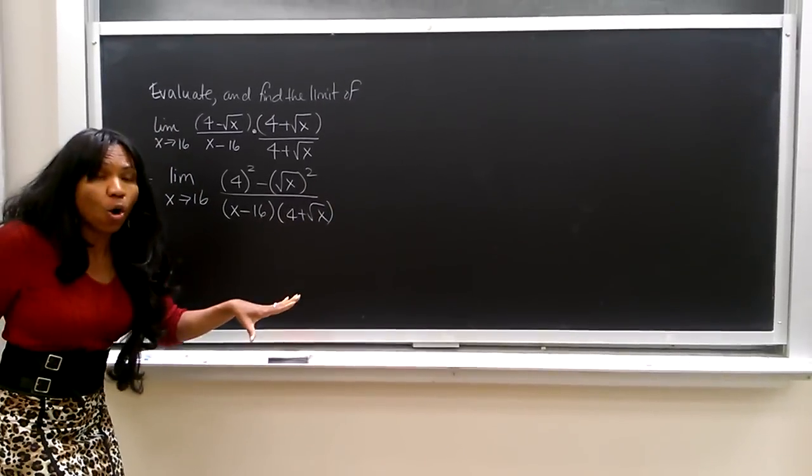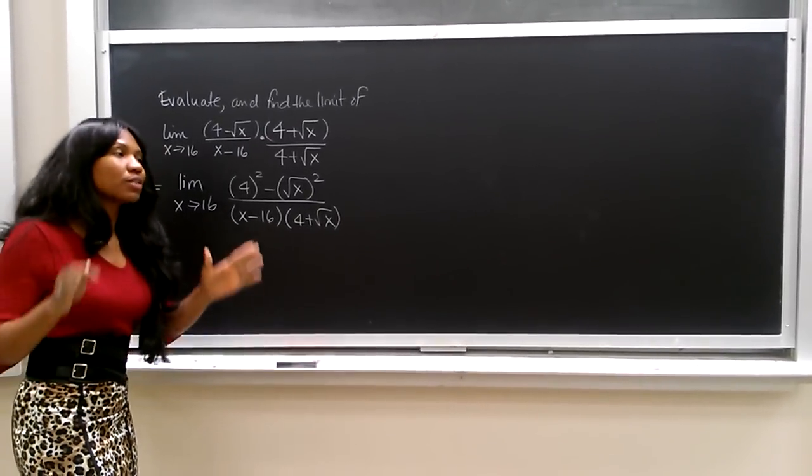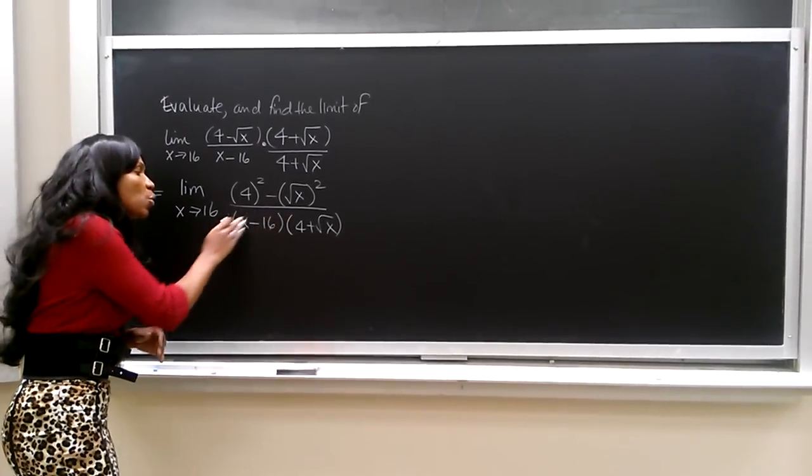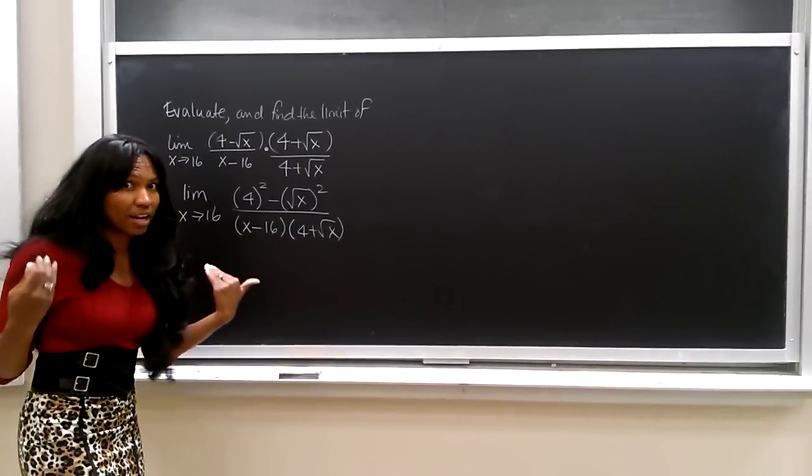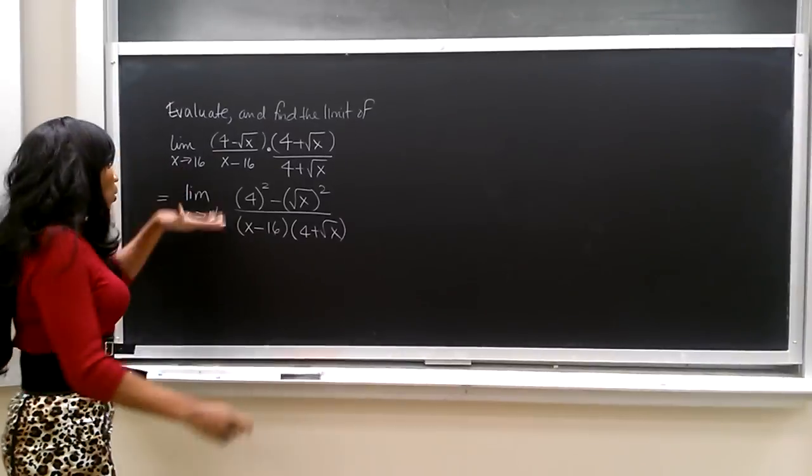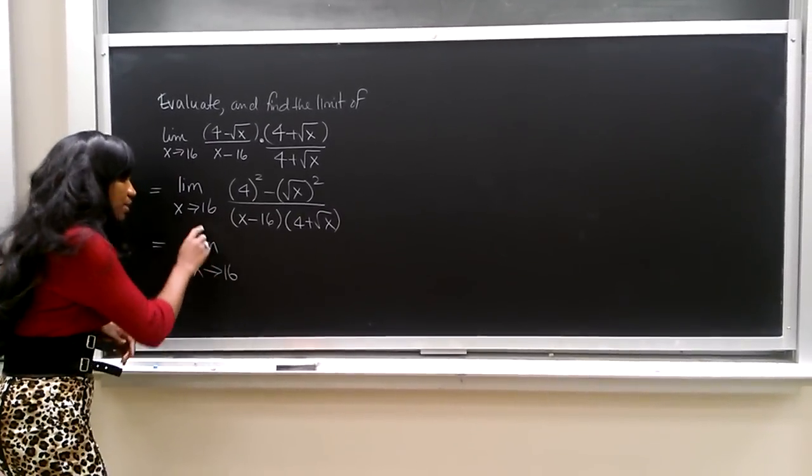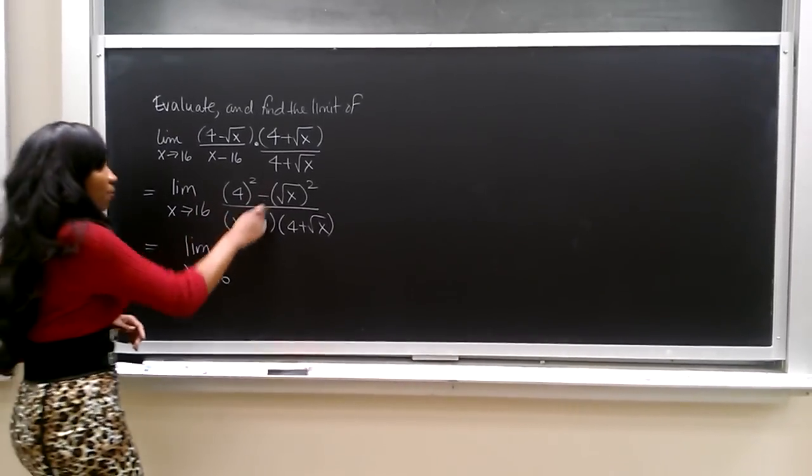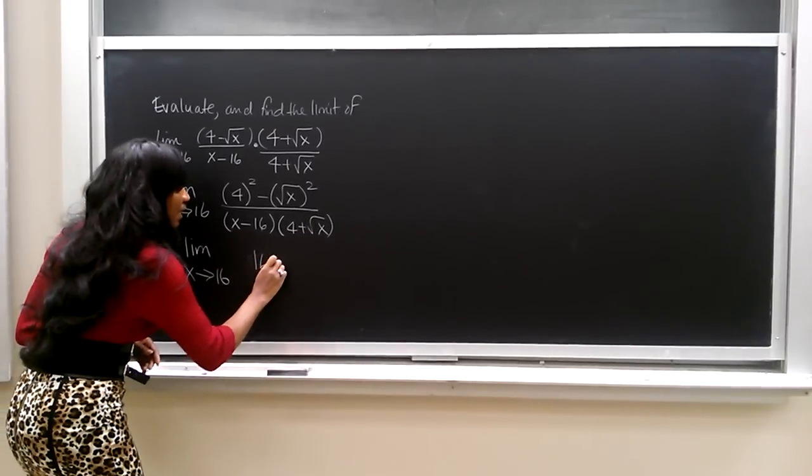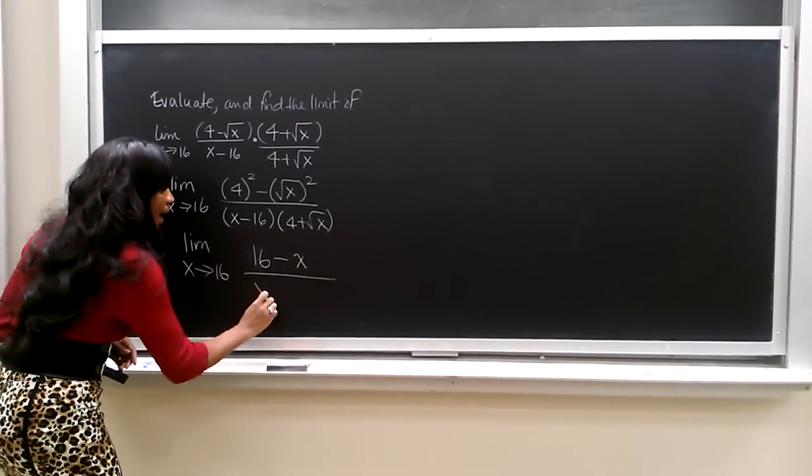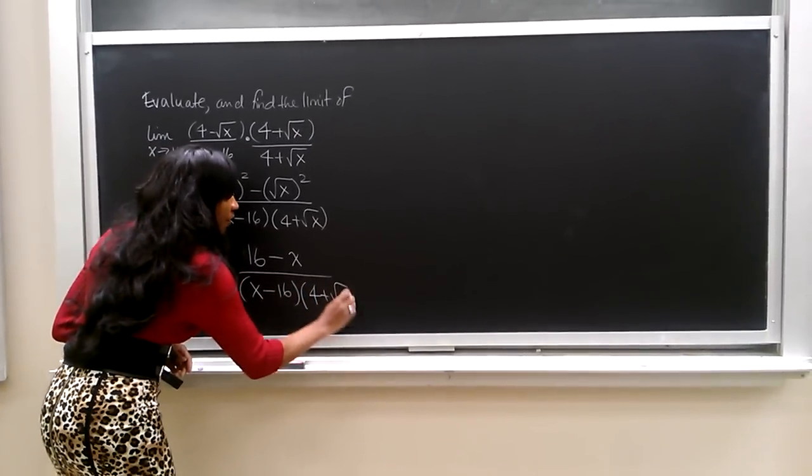Don't multiply the denominator, because we want to leave it as factors, because we want to remove the part, x minus 16, that gives us the denominator of zero. We don't want the denominator of zero. We continue to write the limit in front, which is the limit as x approaches 16, and actually I'm going to correct this, to be 16 minus x divided by x minus 16 times 4 plus the square root of x.